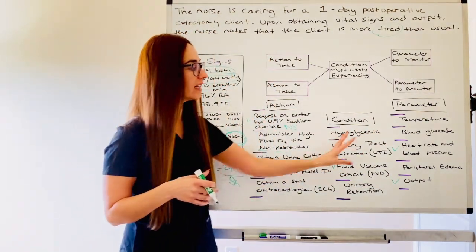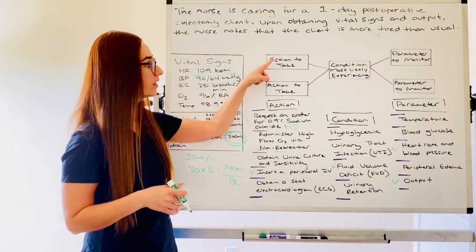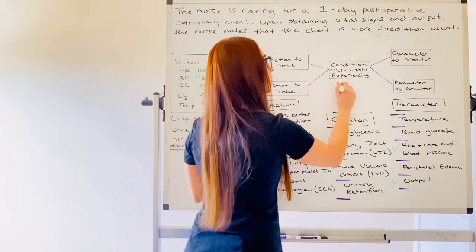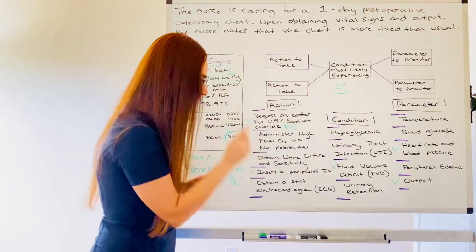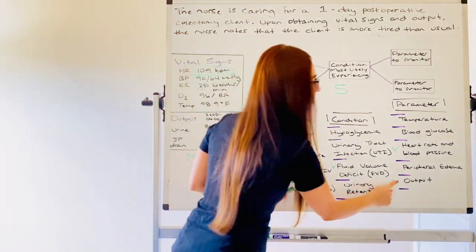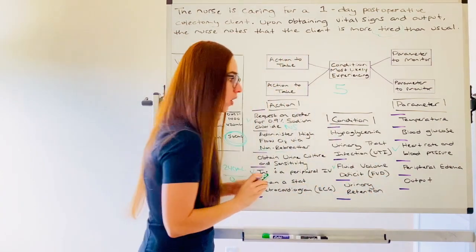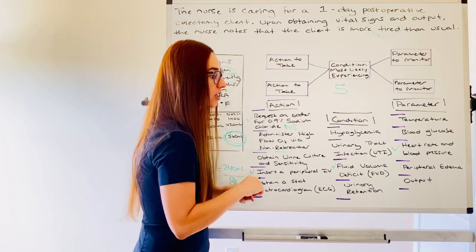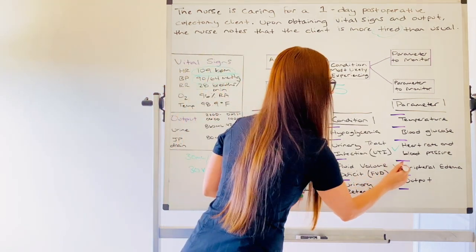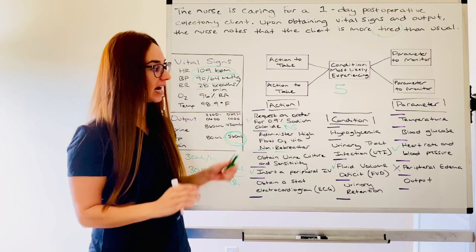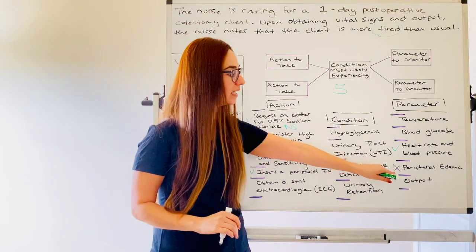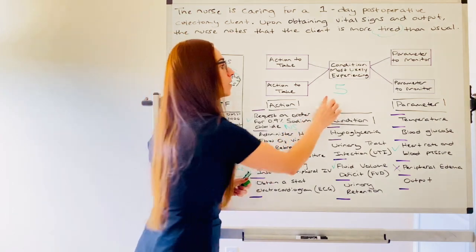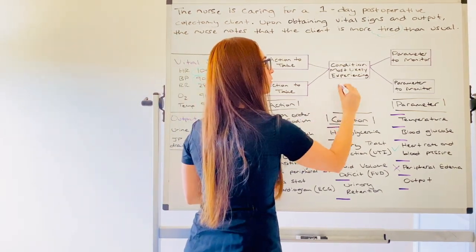And if all of these answer choices were correct, look, think of each one as a separate token. One, two, three, four, five, my maximum point would be five. Let's say I got distracted because I was thinking fluid volume deficit. But of course, edema is related to fluid in general. And I picked this answer choice. So instead of getting a total of five points, because I picked one incorrect answer for my parameter to monitor, you would then have a total of four points.